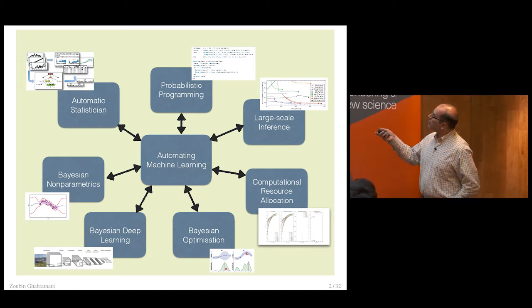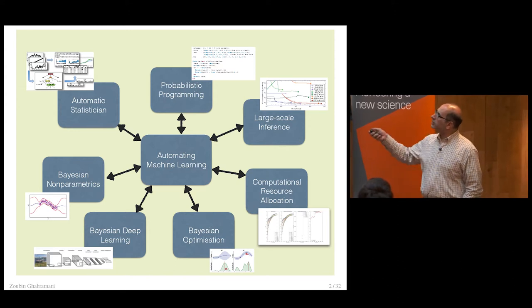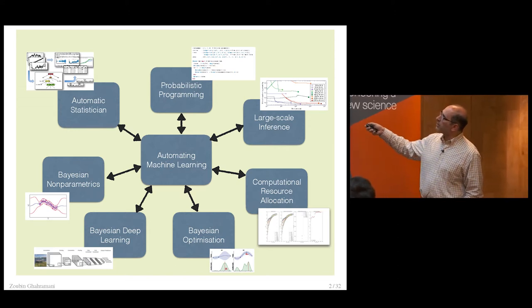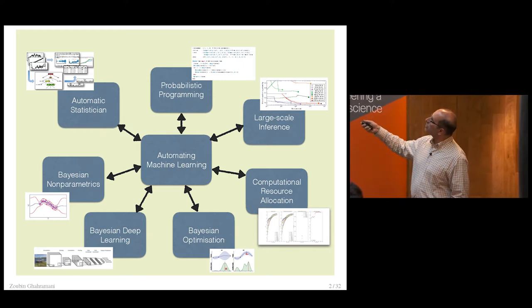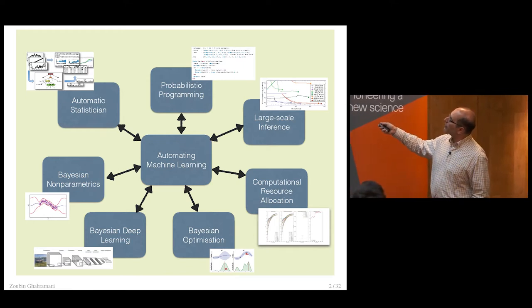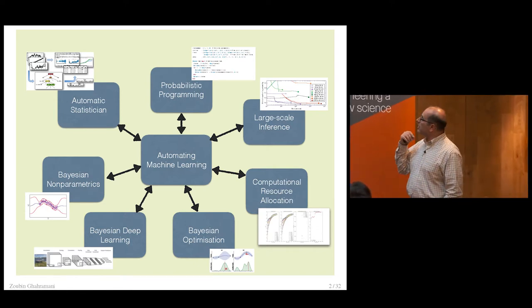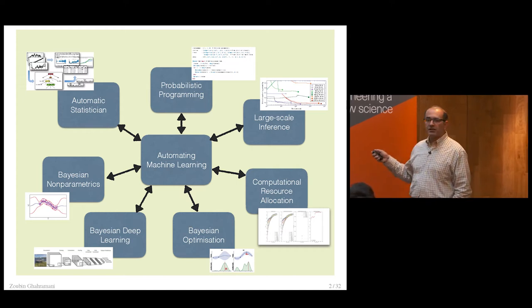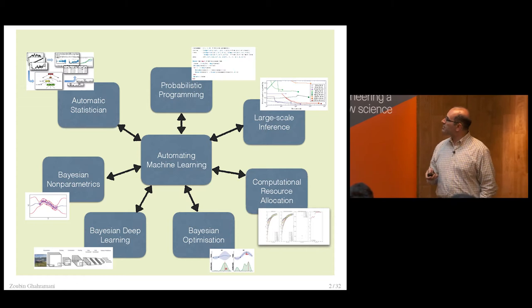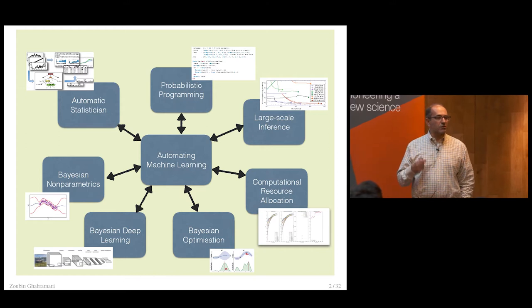Many of the things I've been doing relate to this theme of automating machine learning. Today's talk is firmly focused on the automatic statistician. I'm also passionate about probabilistic programming, which seeks to automate inference in probabilistic models, methods for automatically scaling up to very large datasets, and methods for allocating computational resources in a rational way.